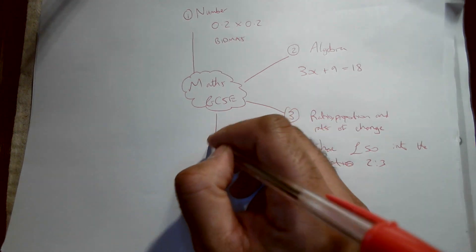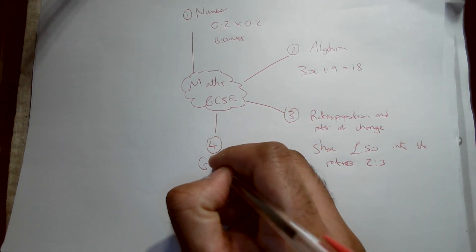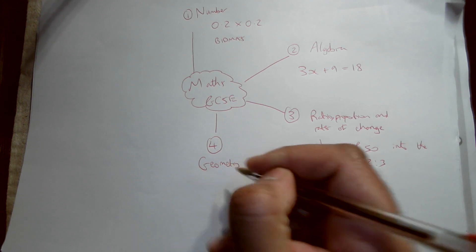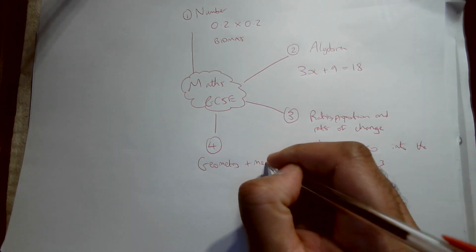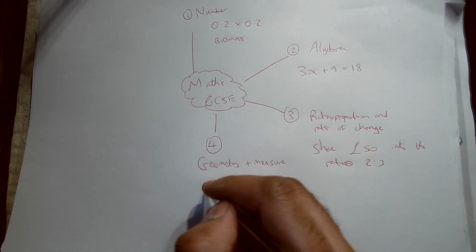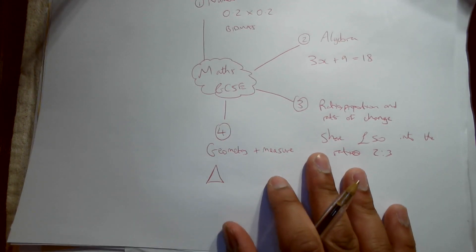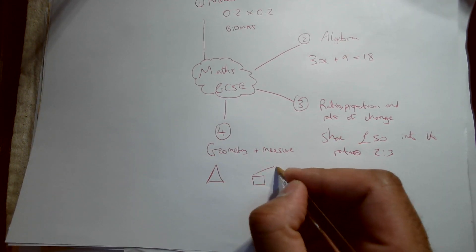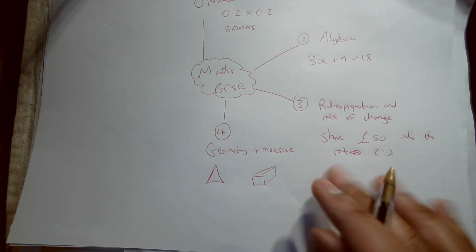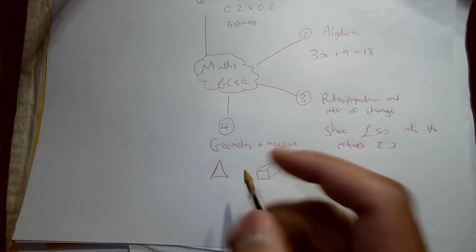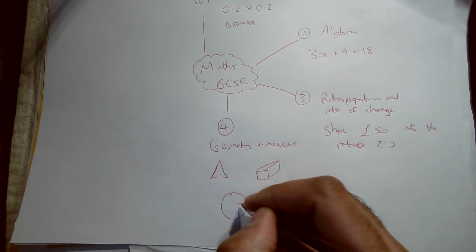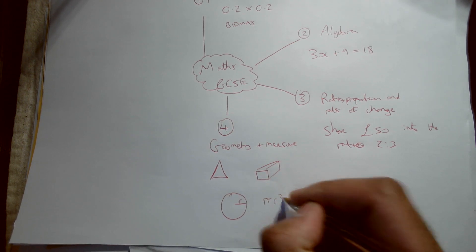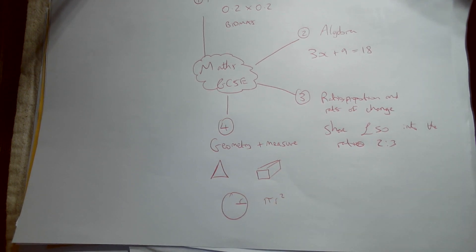The fourth area is geometry and measure. That's things like, you know, finding the area of a triangle, finding the volume of a cuboid, finding the area of a circle, and so on and so forth.